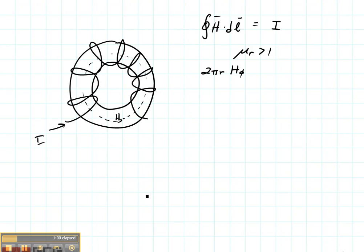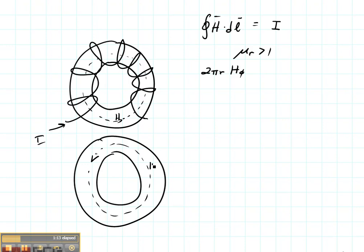Now we need to figure out how much current is enclosed in this toroid. Let's look at it again just from the top. Here's my donut. And there's my Gaussian contour. That's where I'm going to find my magnetic field.